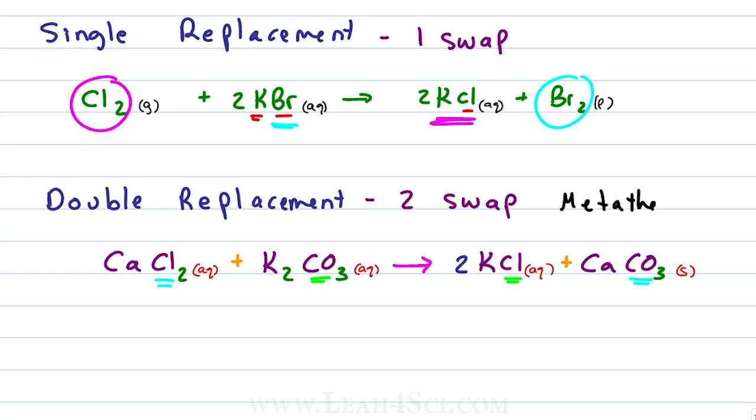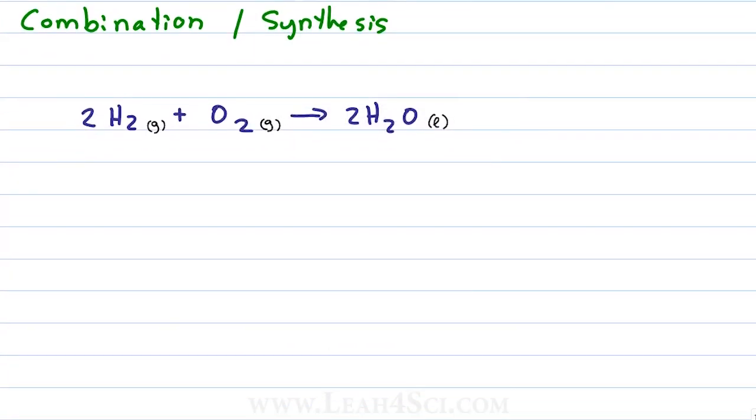A combination or synthesis reaction exactly as the name implies is when two things combine or that we synthesize, make something from smaller pieces. For example, in this reaction where 2H2 gas reacts with oxygen gas to form 2H2O liquid. The way to recognize this is that the reaction has one product formed from two different reactants. The two different reactants had to combine to form that one product.